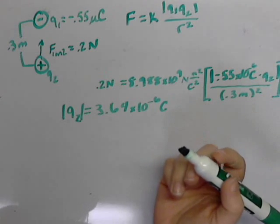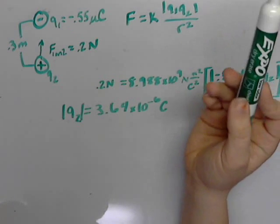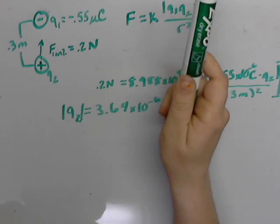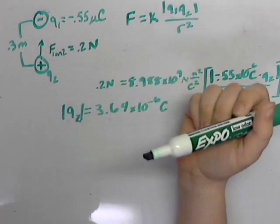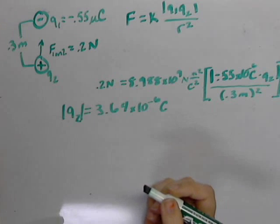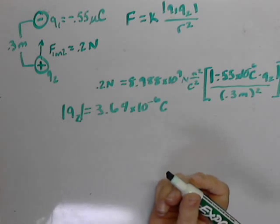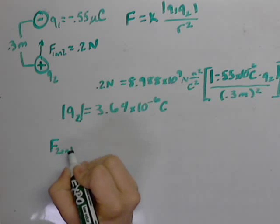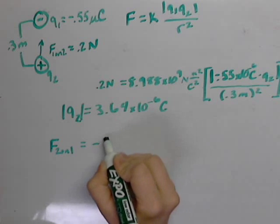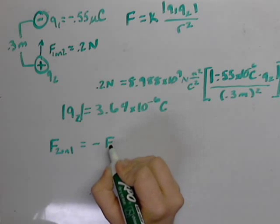Part B is asking you for the magnitude and direction of the force of the unknown charge exerting on Q1. We know by Newton's third law that F of 2 on 1 should equal the opposite of F of 1 on 2.